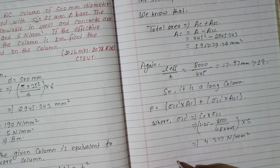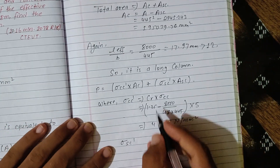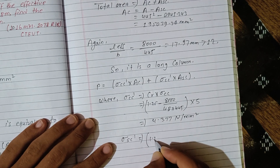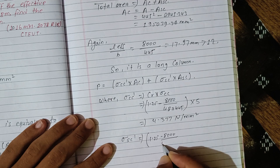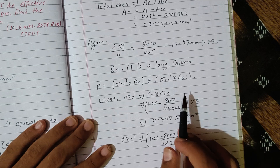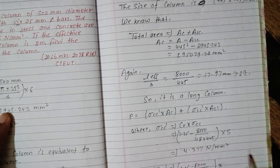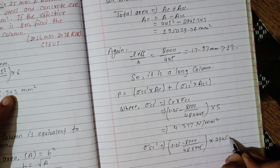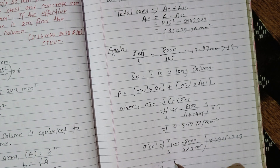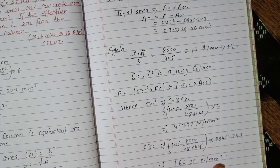Similarly, σ_sc' = Cr × σ_sc, using the same formula: Cr = 1.25 − (8000 / (48 × 445)), so σ_sc' = Cr × 190 = 166.25 N/mm².